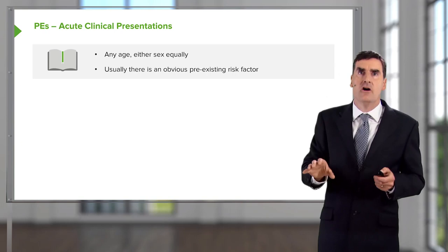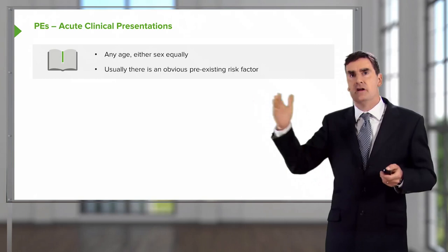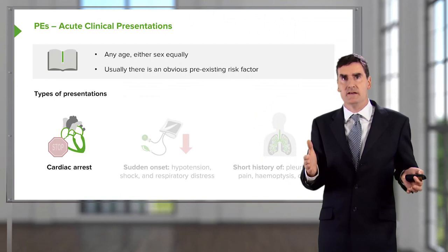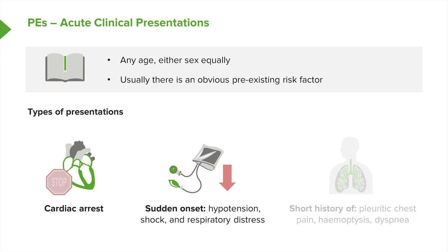With acute presentation, patients can be of any age, either sex equally, and there's usually an obvious pre-existing risk factor — recent surgery, just flown back from Australia, on the oral contraceptive pill, for example. Very large clots may cause cardiac arrest; the patient may just drop dead. A sudden onset clot not quite large enough to stop the heart will cause hypotension, cardiovascular shock, and significant respiratory distress. The smaller medium-sized clots will cause infarction of the lung, leading to pleuritic inflammation, pleurisy and pleuritic chest pain, haemoptysis, and breathlessness. Those are the classical presentations of somebody with acute PEs.